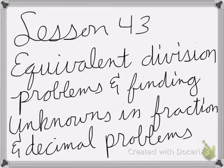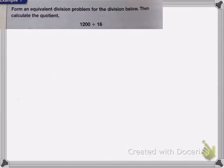Alright, so lesson 43 is on equivalent division problems and finding unknowns in fraction and decimal problems. Here we have the problem 1,200 divided by 16.